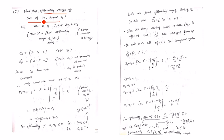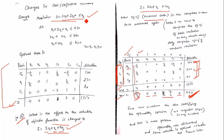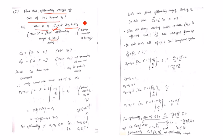To find the optimality range of cost of x1, we set the new z as c1·x1 + 2·x2 + 5·x3, keeping the other coefficients at their original values. We treat c1 as a variable. The process is the same: compute the cb vector. Since x1 is not in the basis, the cb vector does not change.